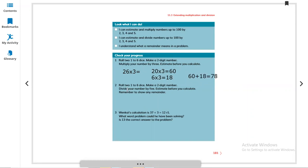Same like this, the second part. Roll the dice again. Venkai's calculation is 37 divided by 3 equals 12 remainder 1. What problem could he have been solving? Is 13 the correct answer to the problem? Let's check. 3 multiplied by 10 is 30, 3 multiplied by 11 is 33, 3 multiplied by 12 is 36. And this is 37. So this answer is correct. So we can say it's the nearest. But 12 is the correct one. So we can make the correction: 12, not 13.